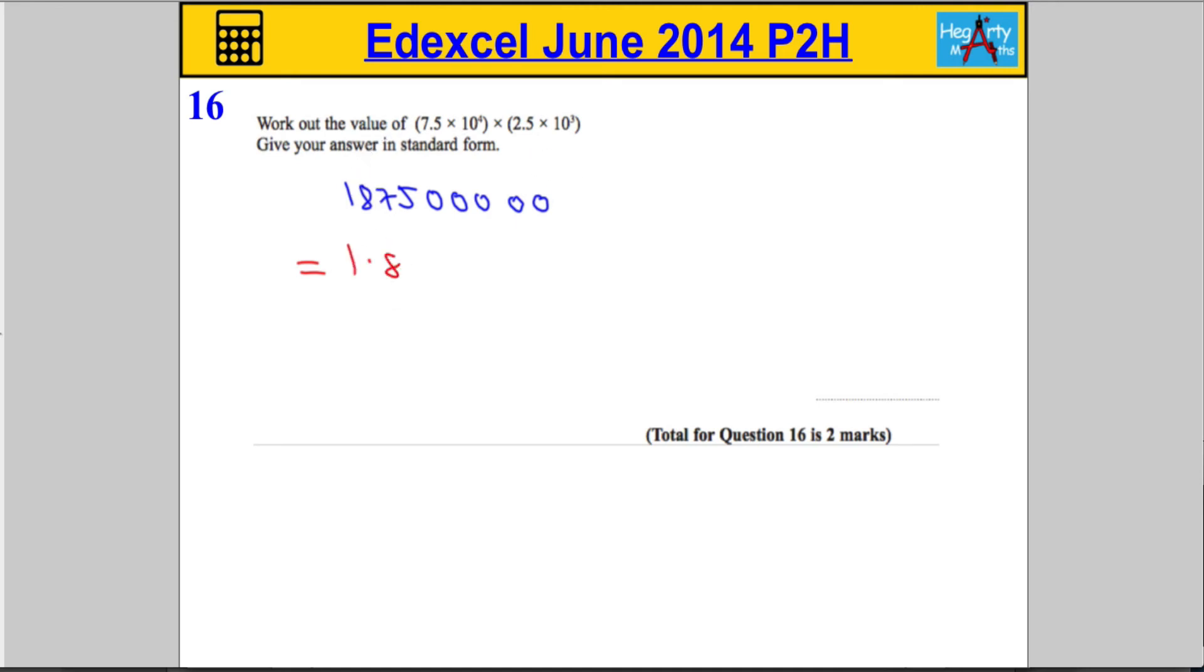So it's going to be 1.875 multiplied by 10 to some power. What's going to take me all the way back to here? So it's going to have to go 1, 2, 3, 4, 5, 6, 7. It's going to have to go 8, a factor of 8, 10 to the 8 times bigger. Okay, so that should get us full marks there.